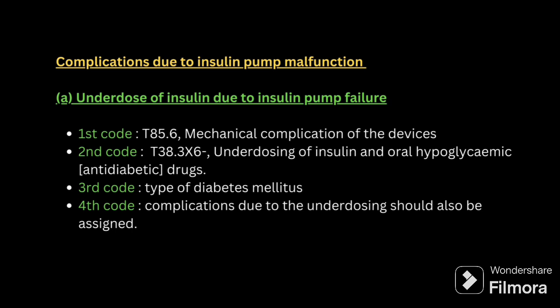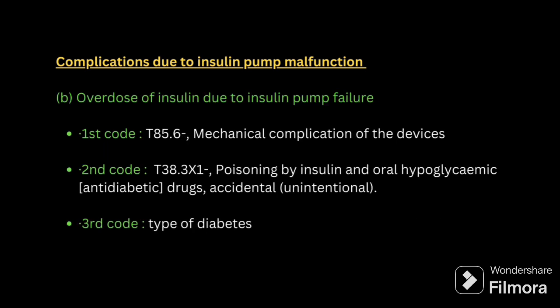Next guideline: complication due to insulin pump malfunction. Under complication, we have two types for insulin pump malfunction — that is underdosage and overdosage. If it is underdosage due to insulin pump failure, first code for mechanical complication of the device, and second code for the complication which is happening because of the underdosage.